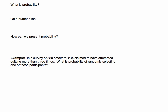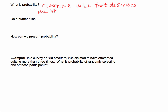In this video, I'm going to go over some basics of probability. The first thing we want to answer is: what is probability? I'm sure many of you have heard this word before — you think about the probability of flipping a coin as 50-50. But what we want to think about is that probability is a numerical value that describes the likelihood of something occurring. That something could be an event.